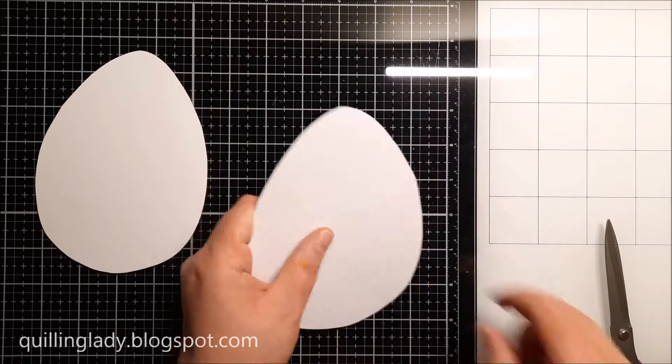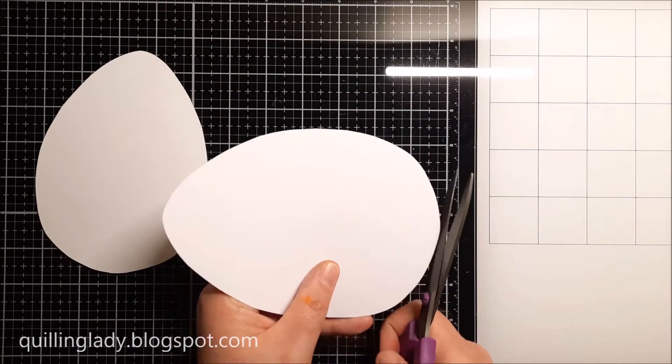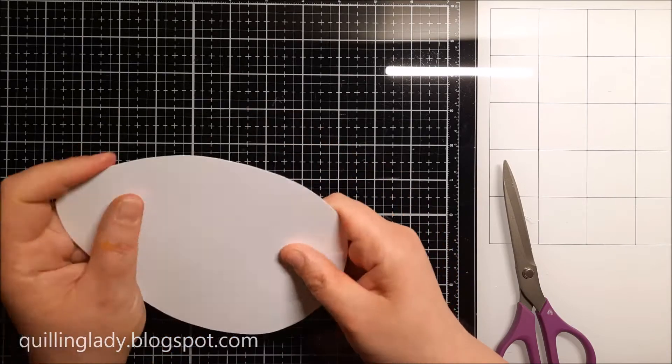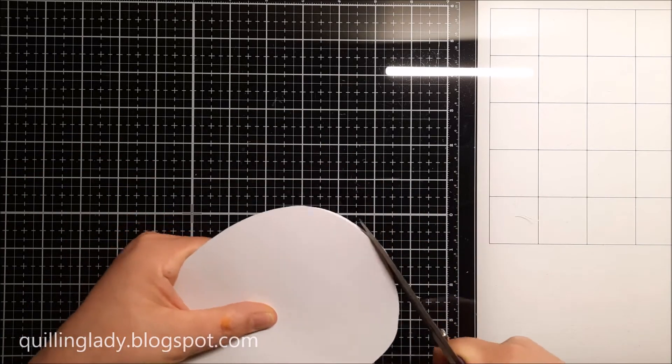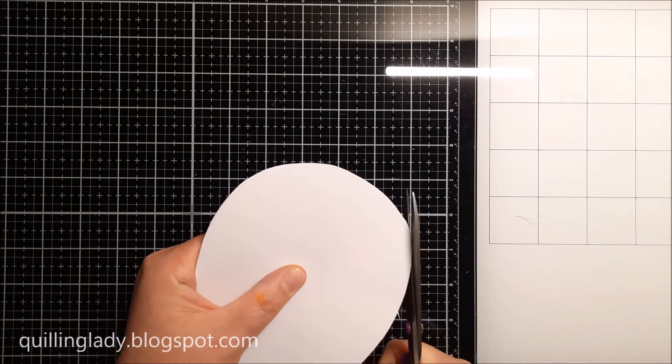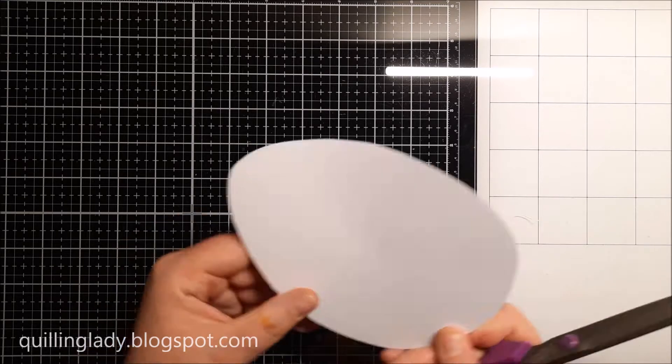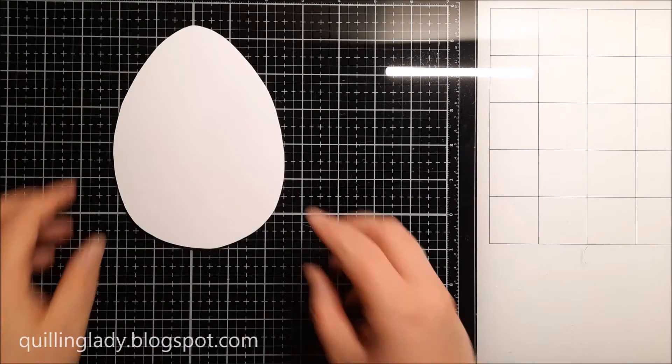If you ever go over the line here, you can actually put those two eggs together and then you can fix it super quick and easy. Now I'm going to show you how to add color.